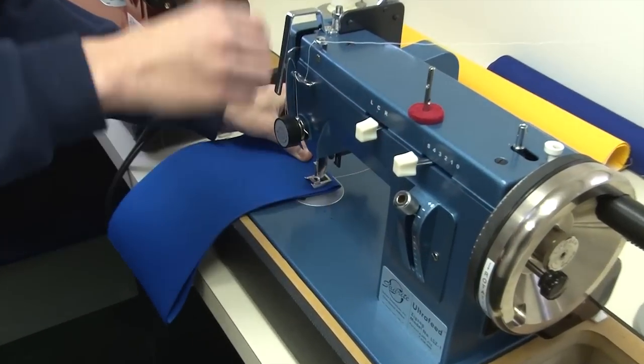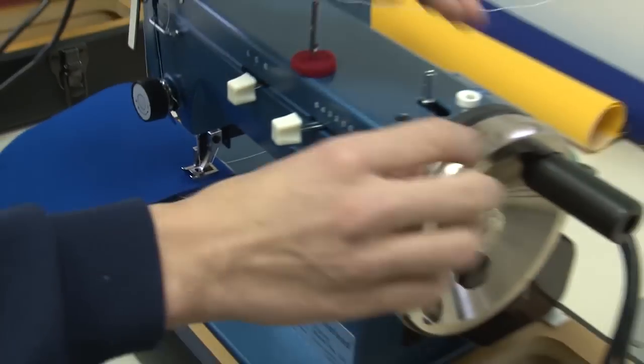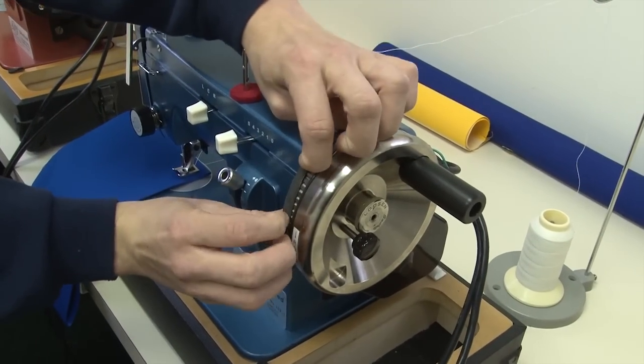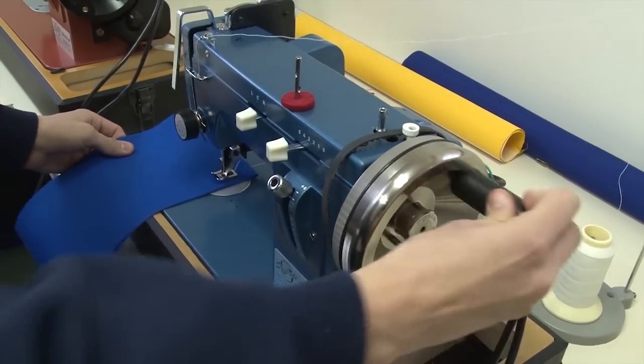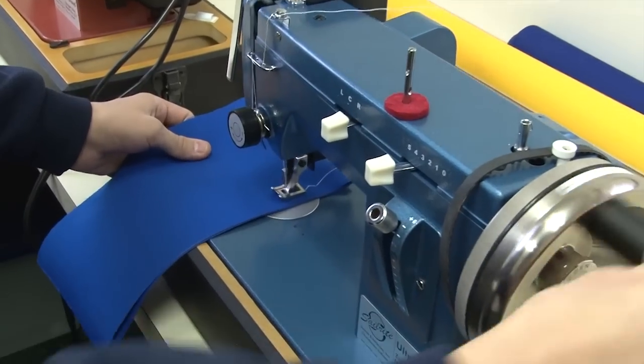Typically, you don't sew through eight layers of a marine grade Sunbrella canvas. You're usually sewing through two. Here we'll slide off the belt and show you how easy it is to just sew through two layers of Sunbrella.